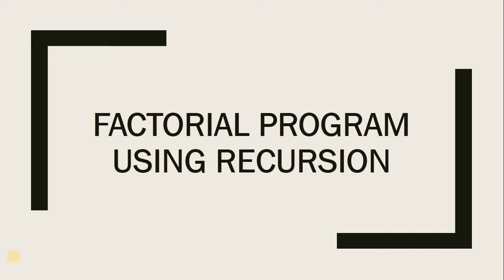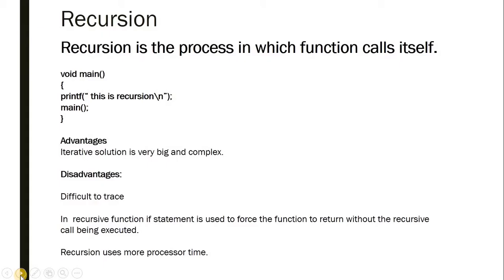Today we discuss a factorial program using recursion. Before knowing about the program, we need to know what recursion is. Recursion is a process in which a function calls itself. For example, I've taken a void main function, and inside it there is a print statement saying 'this is recursion', and in that main function I'm again going to call the main function.